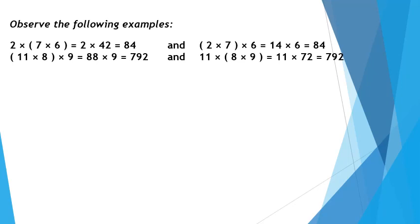Here I am multiplying 2 with 7 and 6. In the first calculation, I have made the group of 7 and 6, and then the product I am multiplying with 2, which gives me a final answer of 84. With the same numbers, only the group is changed. Instead of the group of 7 and 6, I have made the group of 2 and 7. Now 2 times 7 is 14, multiplied with 6, also gives the same answer 84.